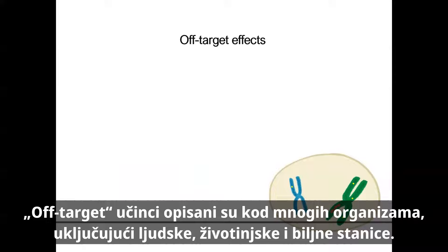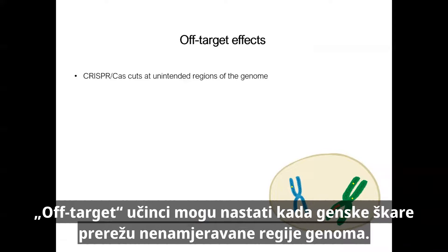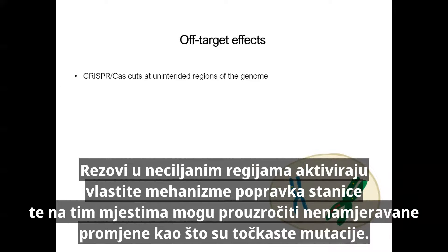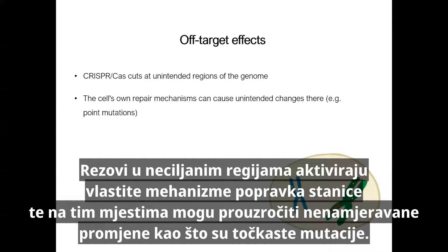Off-target effects have been described in many organisms, including human, animal, and plant cells. Off-target effects can arise when the gene scissors cut at unintended regions of the genome. Often these DNA regions are very similar to the target sequence, and the gene scissors confuse the off-target sites with the actual target sequence. The cuts at the off-target regions activate the cell's own repair mechanisms and can cause unintended changes such as point mutations there.